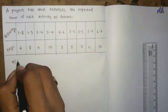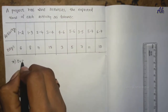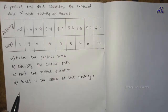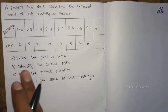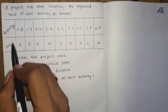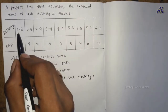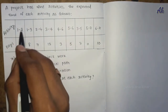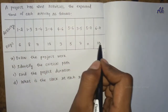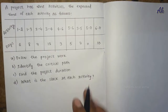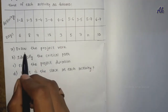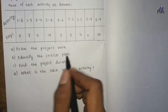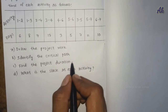Hello friends, today let us see a new topic in industrial management and entrepreneurship. Here is a question: a project has nine activities. The expected time of each activity is given in days. The activities are 1-2, 1-3, 2-4, 3-4, 4-6, 5-6, 3-5, 5-7, and 6-7. The questions ask us to draw the project network, identify the critical path, and find the project duration.